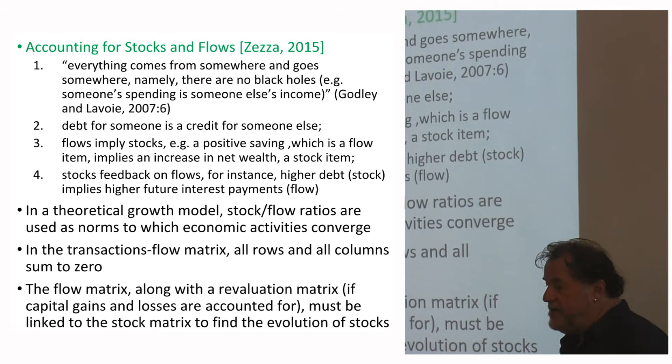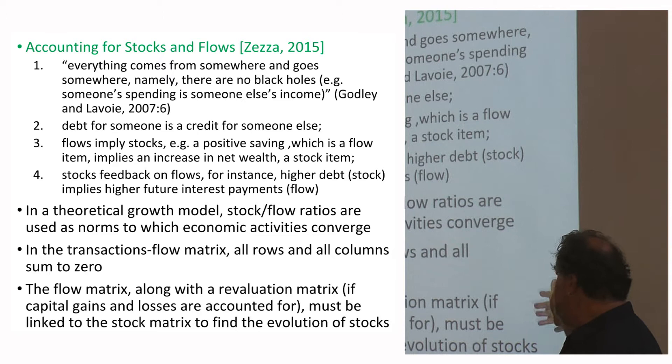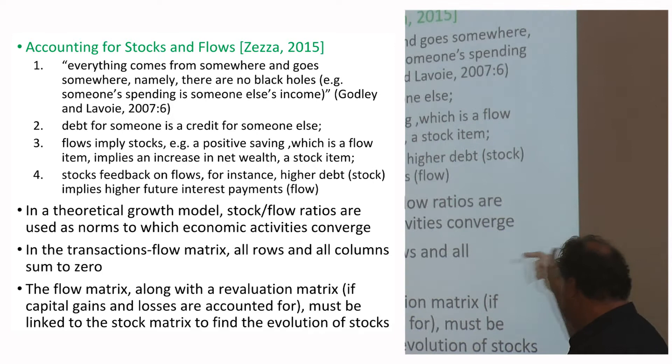We're going to look at a transaction flow matrix where all rows and columns sum to zero. In long-run modelling, you want a flow matrix along with a revaluation matrix that accounts for capital gains and losses, and that has to be linked back to the stock matrix to find the evolution of stocks.